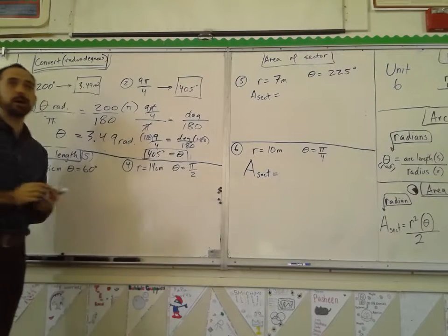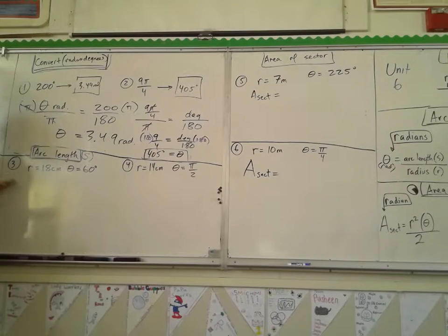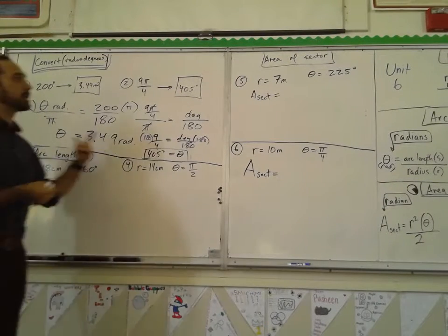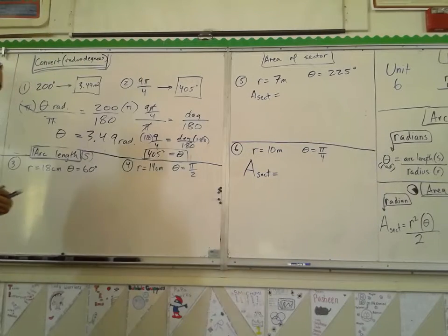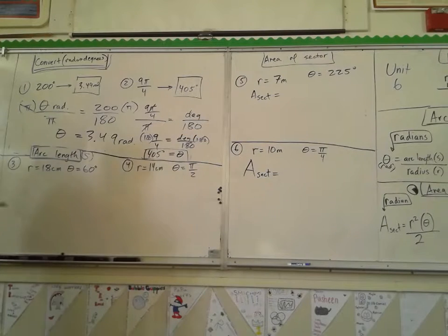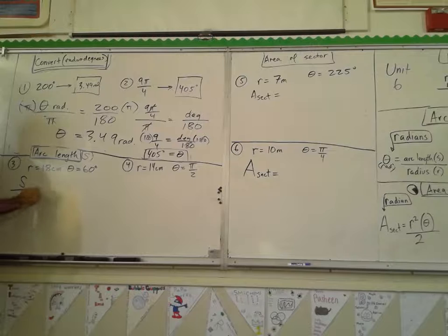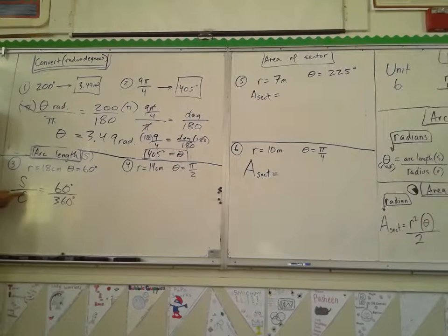How do we feel about conversions? Good. Now for arc length and area of a sector, recall that radian problems use a different formula than degree problems. With a radius of 18 centimeters and theta of 60 degrees, it's a degree problem. Arc length s over circumference equals 60 degrees over 360 degrees — it's a basic proportion.